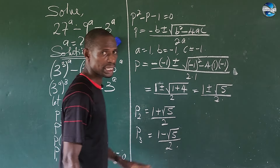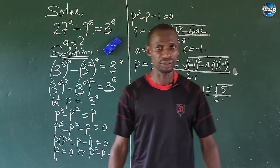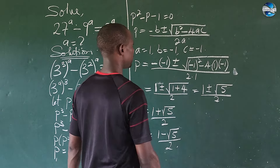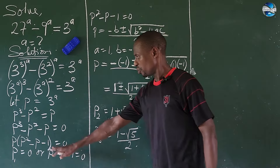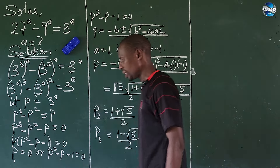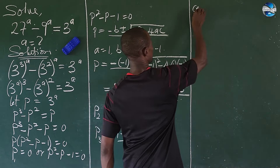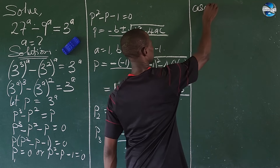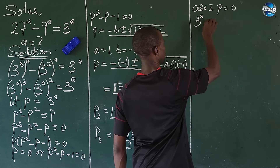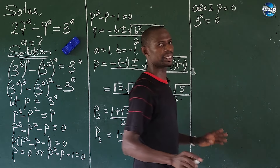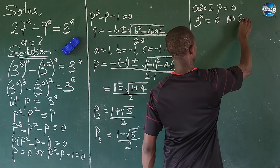Recall we said p equals 3^a. So how do we get our value of a? For Case 1, p equals 0, meaning 3^a equals 0 — there is no solution. So Case 1 gives no solution.